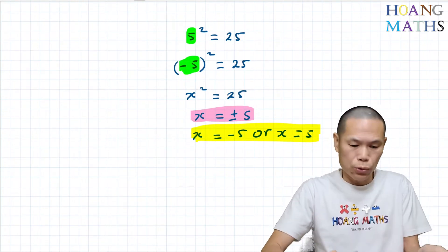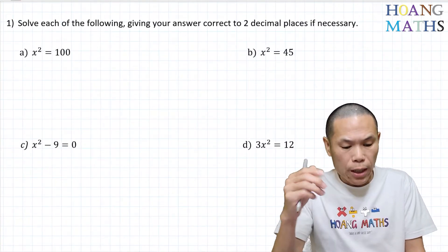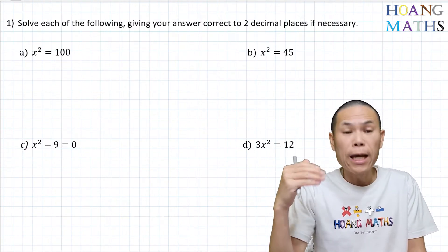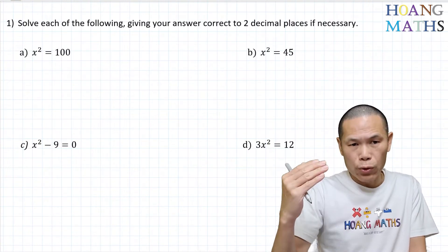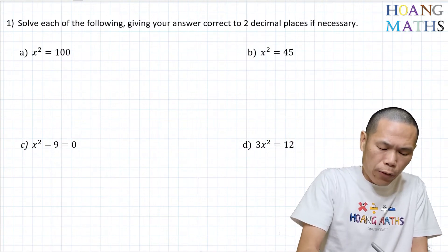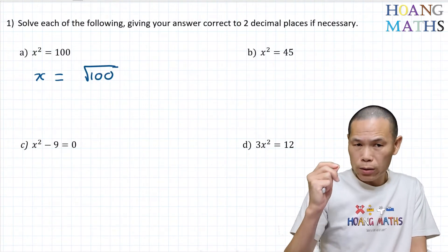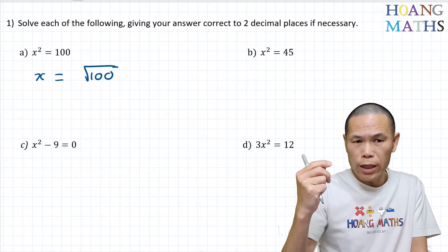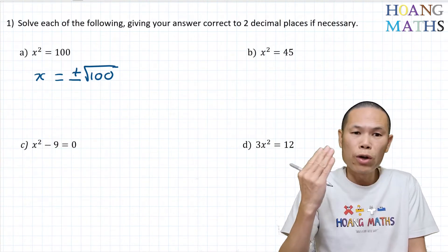Let's just go through a couple of examples. Solve each of the following, giving your answer correct to 2 decimal places if necessary. Part i: x squared is equal to 100. The opposite of square is square root, so we get rid of the square by square rooting both sides. So x is equal to the square root of 100. But because x squared equals 100, x can be either a positive or a negative number, so we write plus or minus square root of 100.